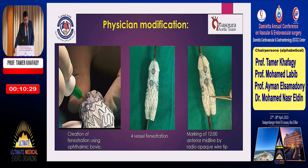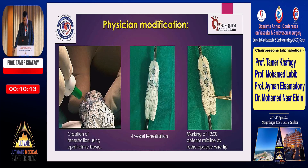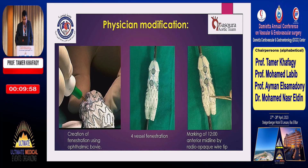You can see how the creation of the fenestration is done using an ophthalmic bougie. After creating the four fenestrations, we mark the edge of each fenestration using the tip of a wire — or in other cases a coil or snare. We also mark the midline anteriorly using a radiopaque wire tip.